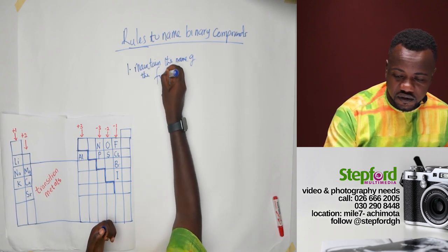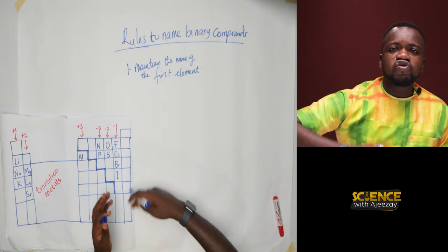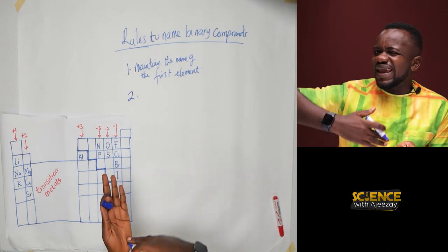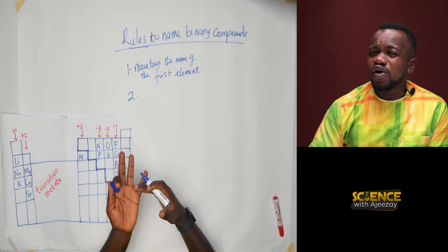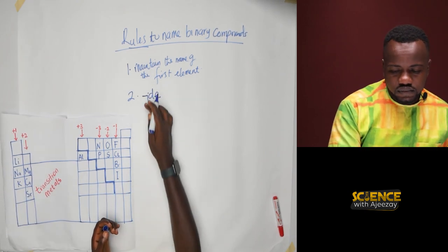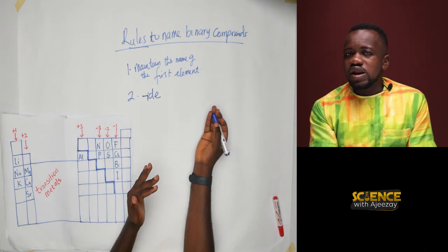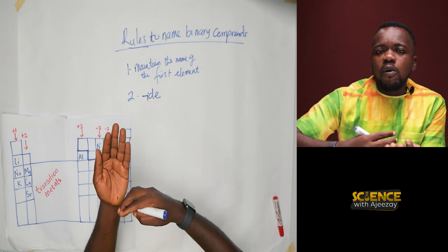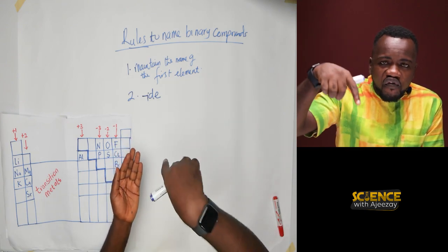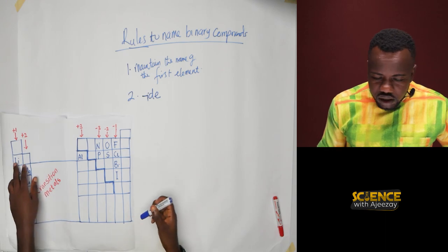For the second element, you drop the last two, three, or four letters of its name and replace them with the suffix '-ide'. So the first rule is: maintain the name of the metal. The second rule is: take the non-metal name, drop the ending letters, and replace with '-ide'.